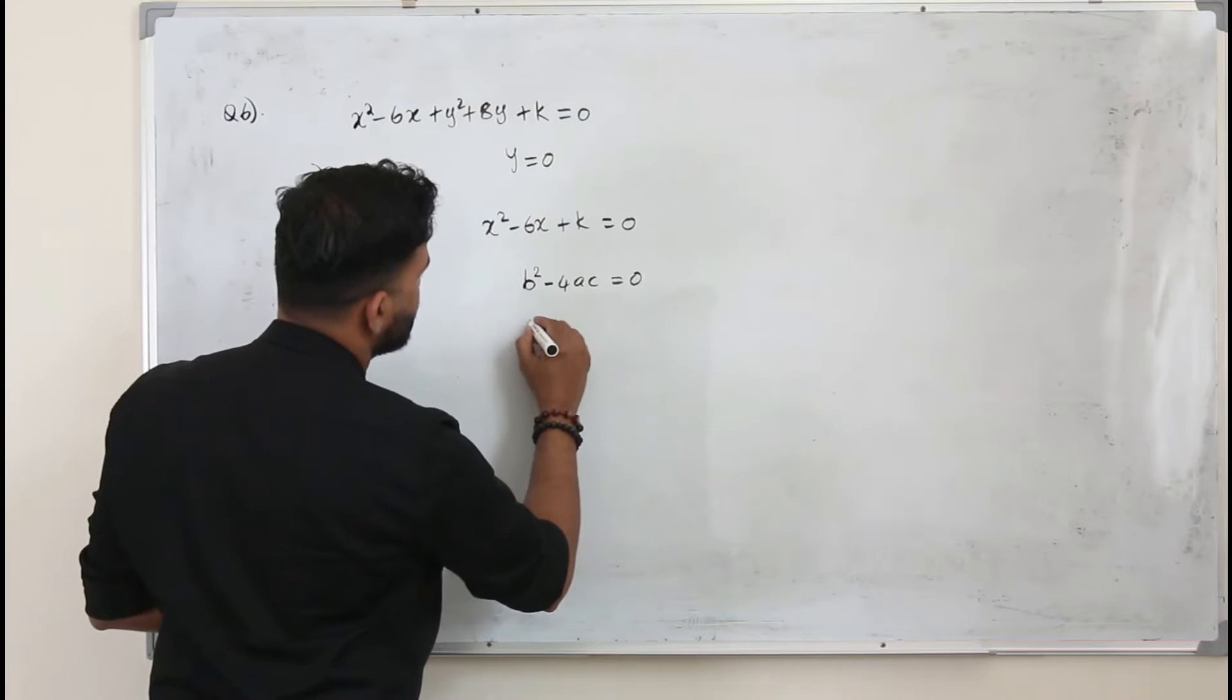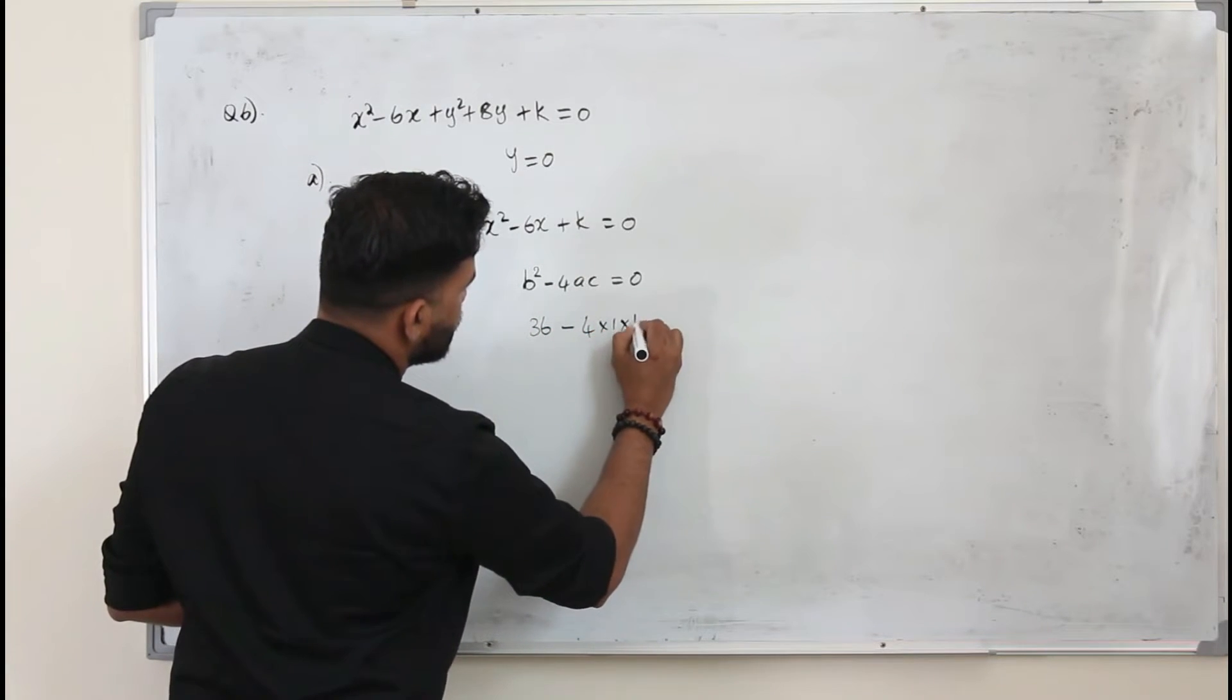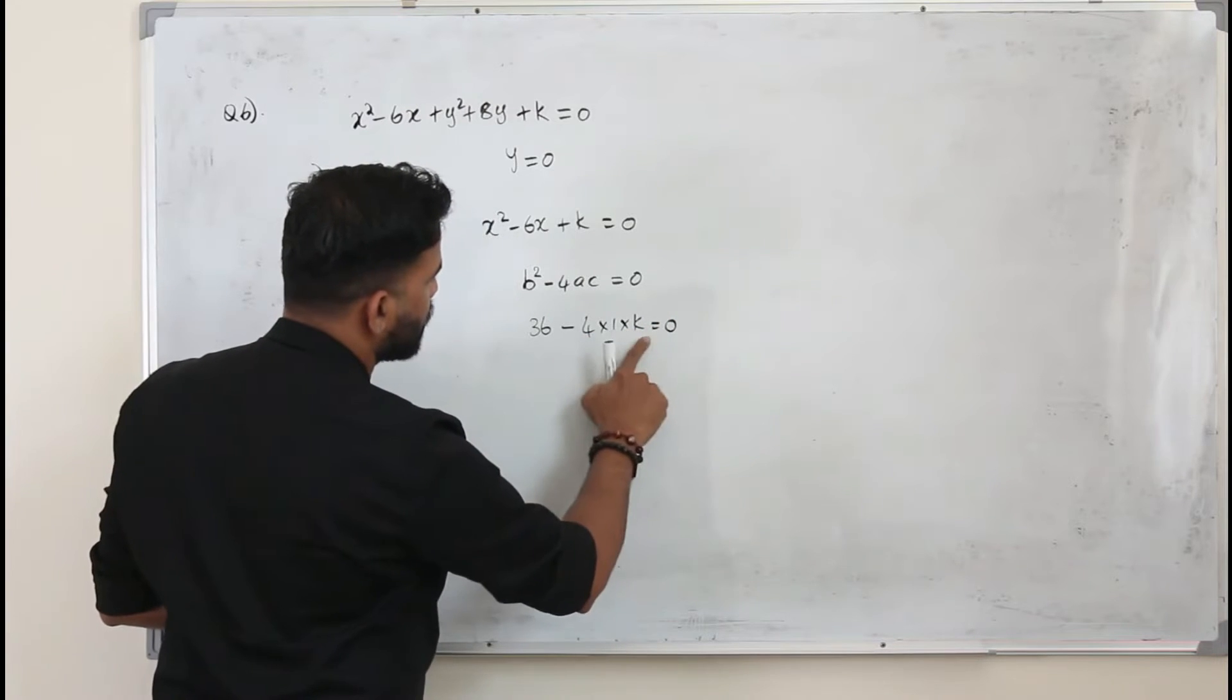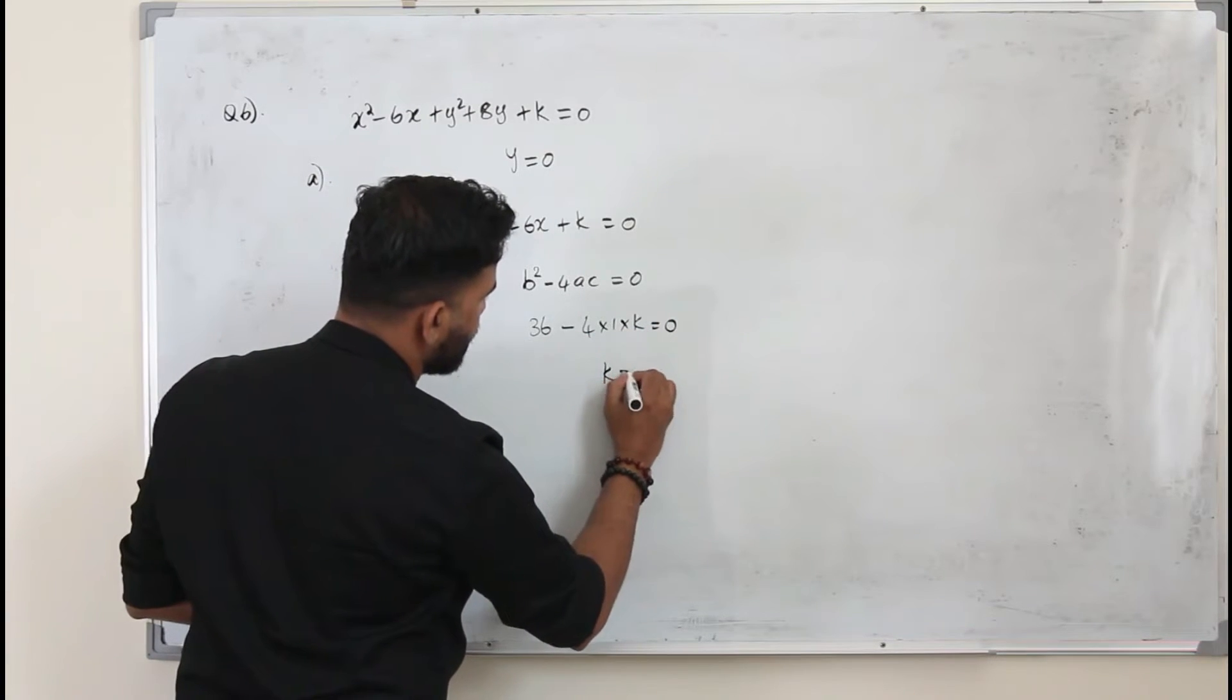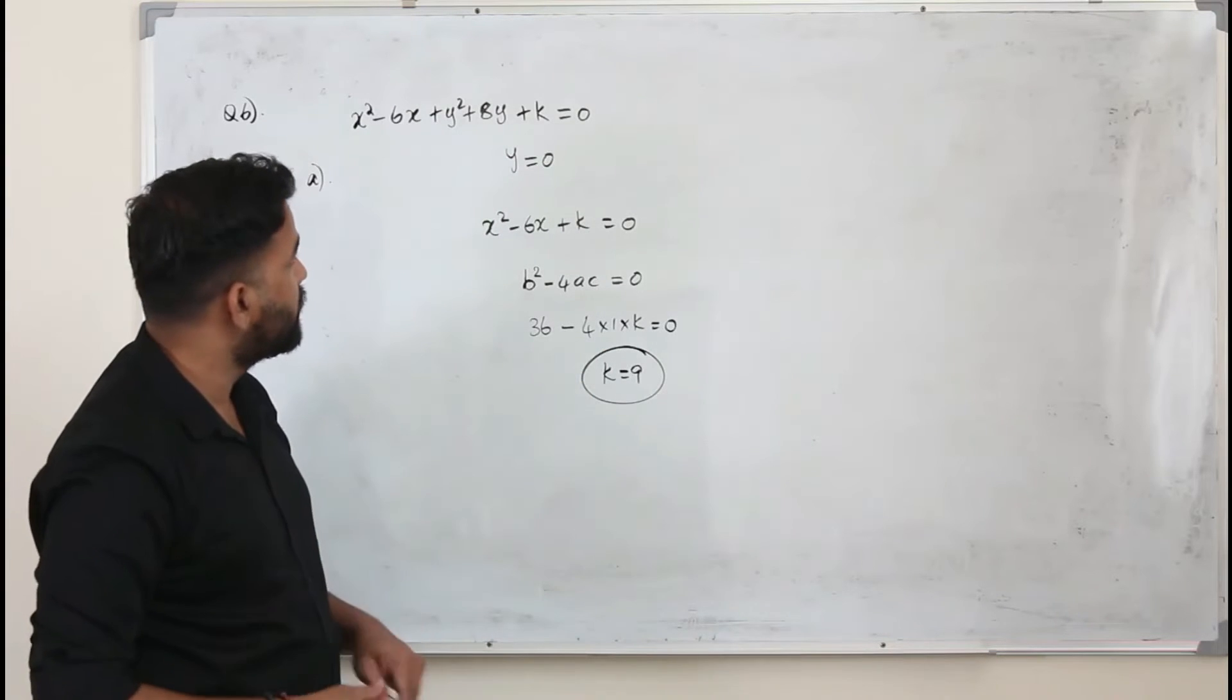b squared, which is minus 6 whole squared, minus 4ac equals 0. So 4k is 36, k is 9. That's it. That's how we find the value of k.